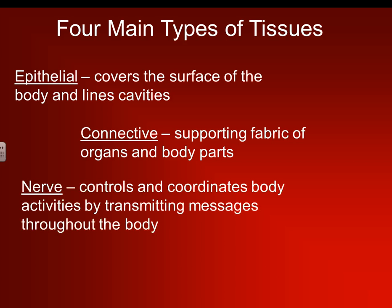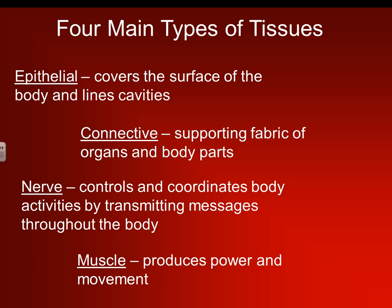Next is nerve tissue. These control and coordinate body activities by transmitting messages throughout the body. And then the fourth one is our muscles — yes, muscles is a type of tissue. They produce power and movement. Without muscles, our body would not be able to stand up straight, hold a pen, or pick up a glass of water to keep our tissues hydrated. So muscles, nerves, connective tissues, and epithelial are all four of the main types of tissues.